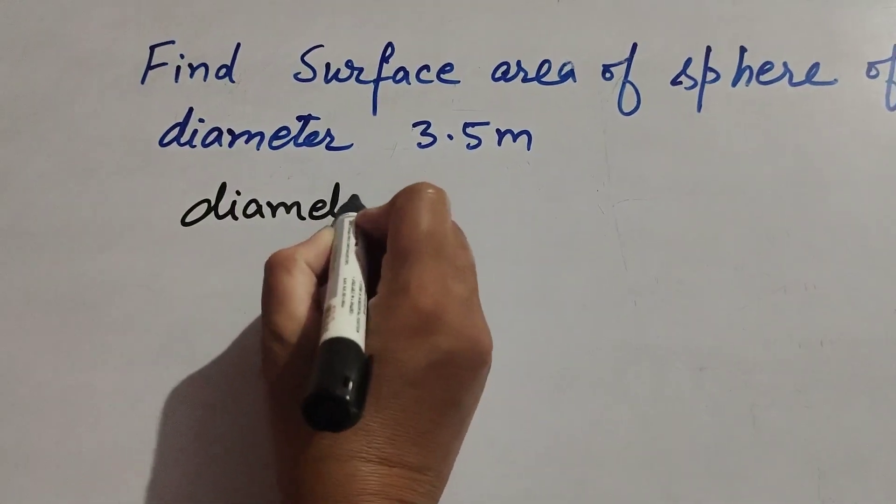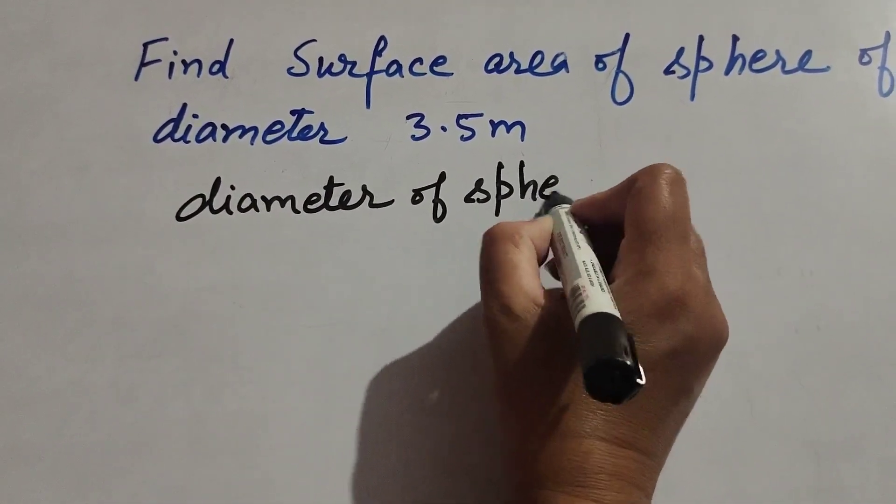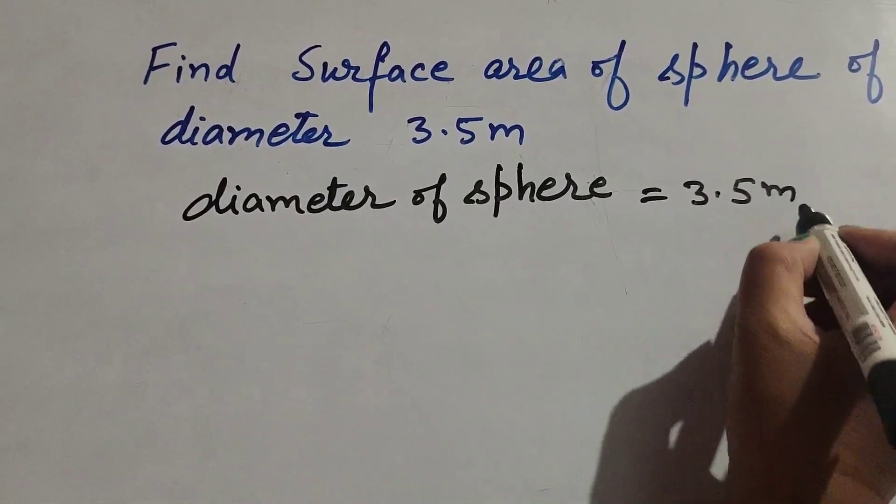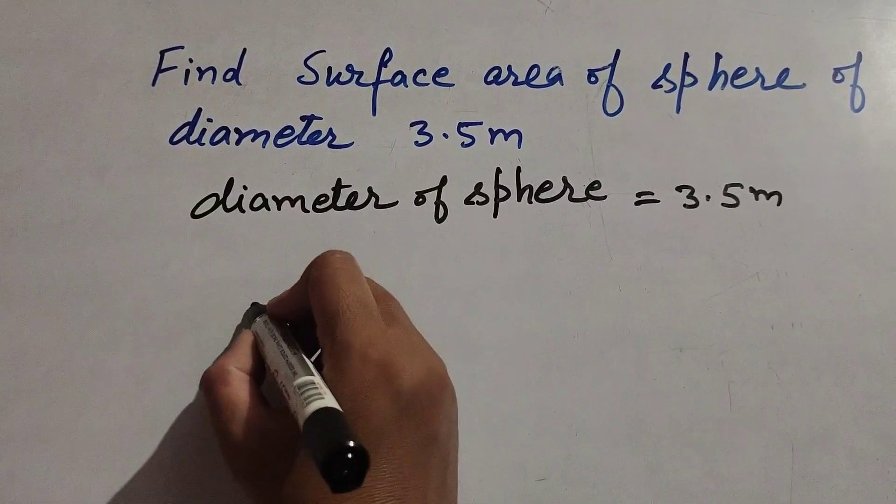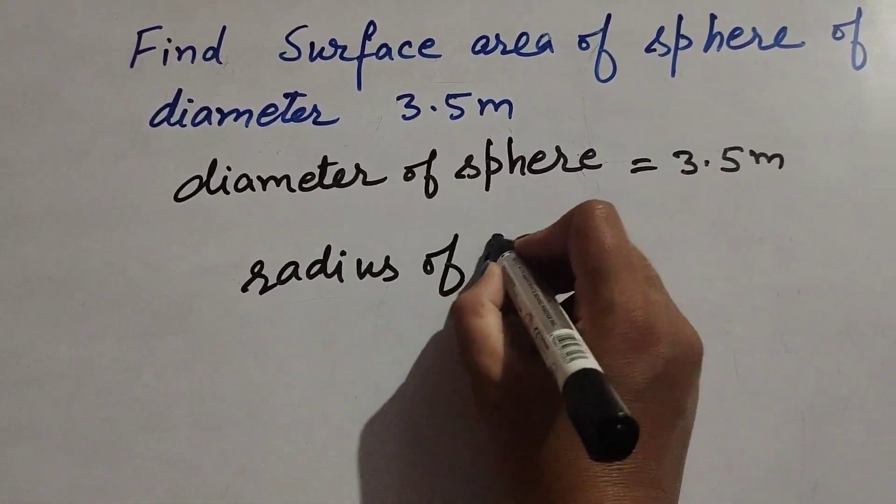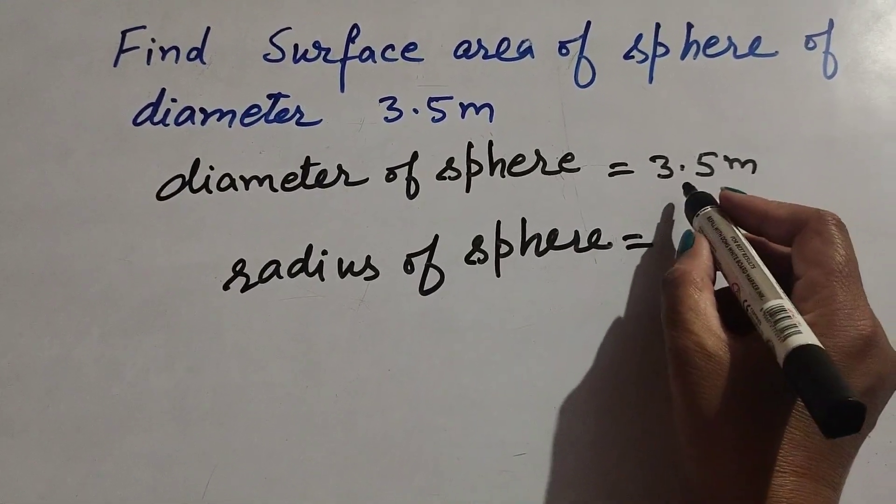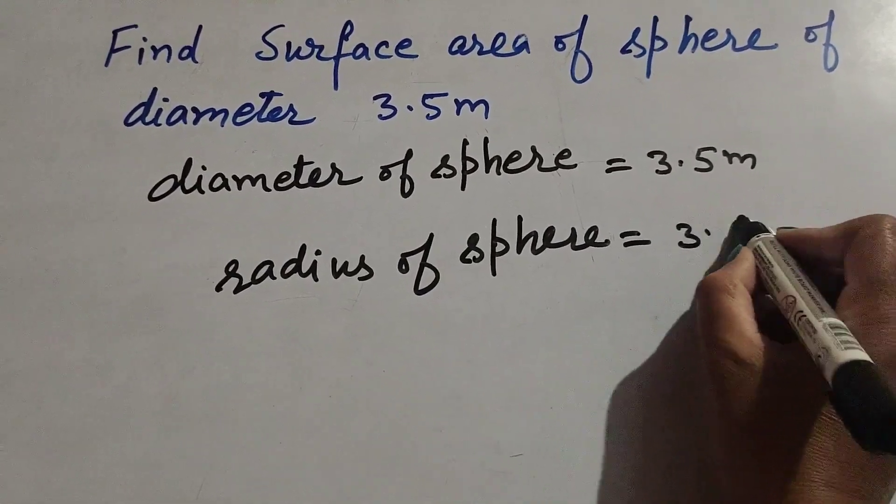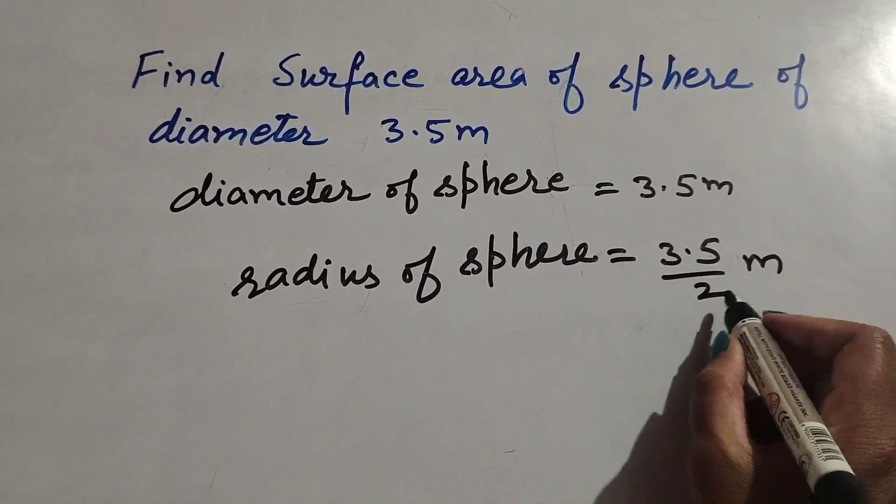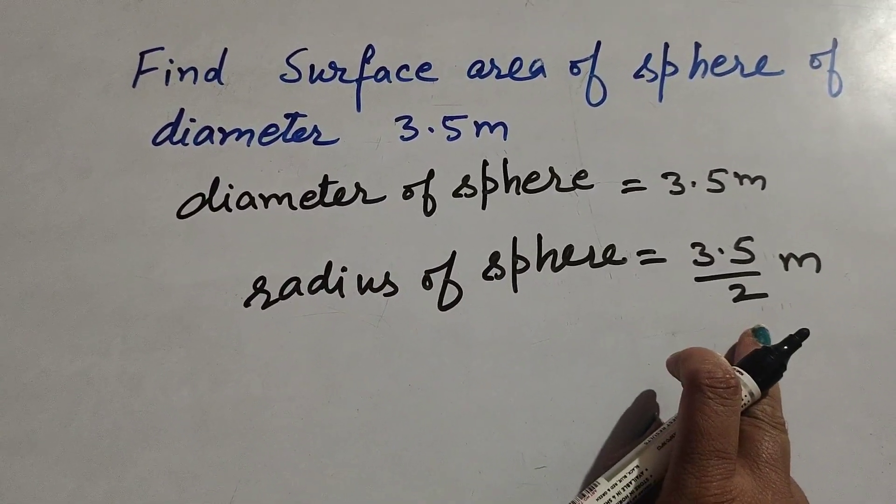Diameter of sphere is given equal to 3.5 meters. To find surface area of sphere we need to find its radius. So radius of sphere is equal to diameter divided by 2. Diameter is 3.5 divided by 2 meters, so 3.5 over 2 meters. This is the radius of sphere.